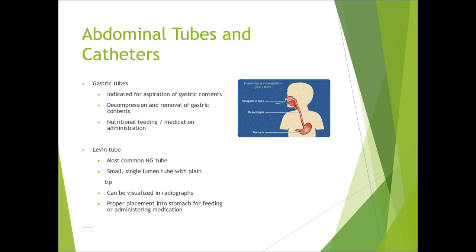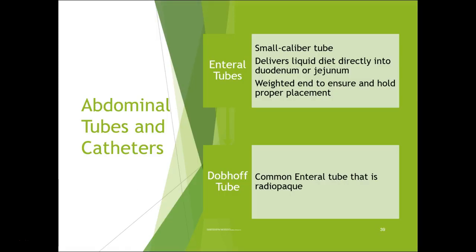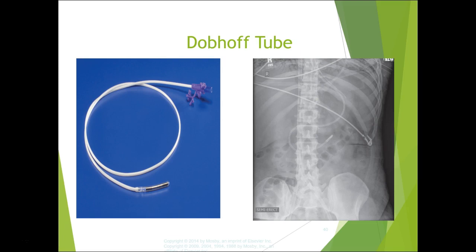Gastric tubes are used for aspiration of gastric contents, decompression of blockages, and to deliver food and medication. The Levin tube is the most common NG tube — small, single lumen, plain tip, radio-opaque, proper placement into the stomach. Enteral tubes deliver liquid diet directly into the duodenum or jejunum with a weighted end to keep them in place. The Dobhoff is a common enteral tube that is radio-opaque, with proper placement at the ligament of Treitz going into the jejunum.